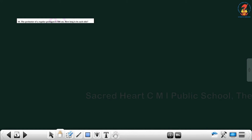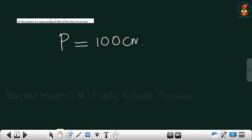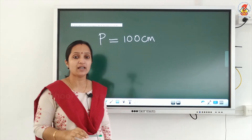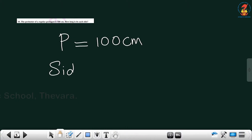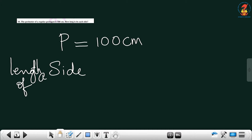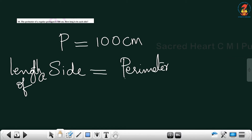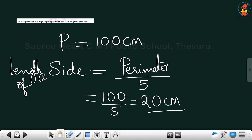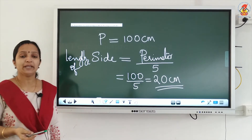Next question: the perimeter of a regular pentagon is 100 centimeter. A regular pentagon means pentagon has 5 sides and all 5 sides are equal. To find the length of a side, we use perimeter divided by 5, that means 100 divided by 5, and the answer is 20 centimeter.